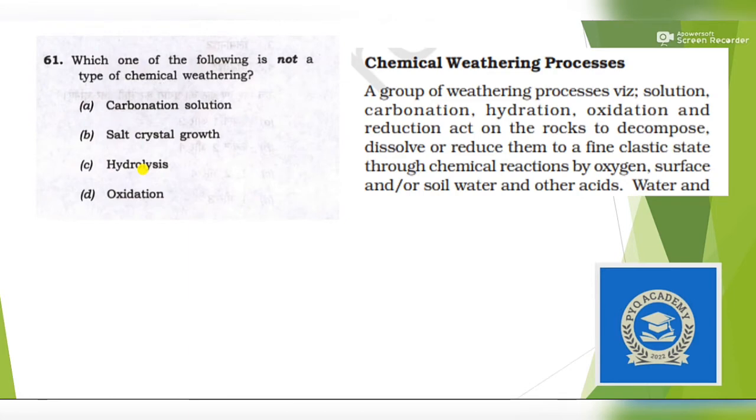Next question: Which of the following is NOT a type of chemical weathering? That means in which type of weathering no chemical reaction takes place. By eliminating the options we can come to our answer. In carbonation, chemical reaction will surely take place, and in hydrolysis and oxidation chemical reaction will take place. But in growth of salt crystal, no chemical reaction takes place. Rather than being a chemical weathering, it is a physical weathering. Our answer is option B.